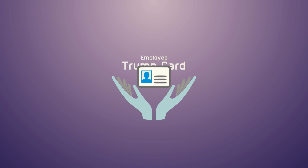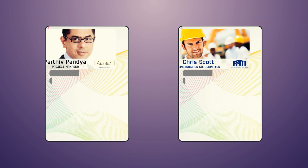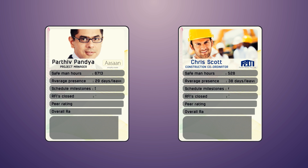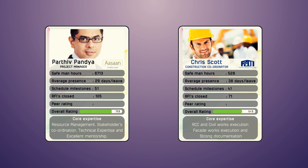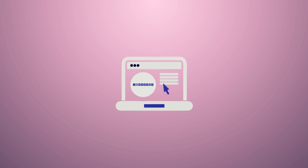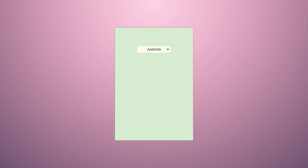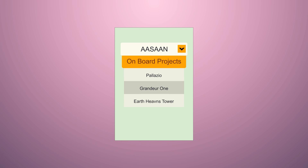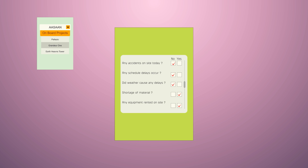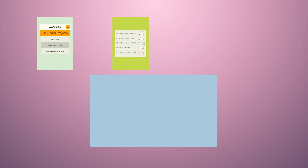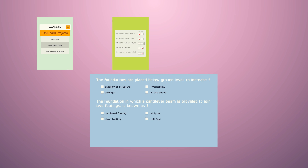The app also features an Employee Trump Card, which automatically records an employee's performance based on their app operations, and could act as a catalyst during appraisals. Our core objective is to create a tool that simplifies systems and processes. We aim to collect predefined data by using drop-downs, checkboxes, and MCQs.